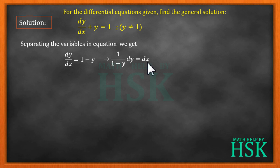So the variables are now separated. Now we are going to integrate both sides, so integration of 1 upon 1 minus y dy. We know that integration of 1 upon x is equal to log x, so integration of 1 upon 1 minus y would be equal to log of 1 minus y.